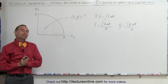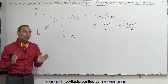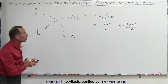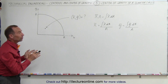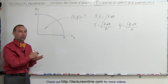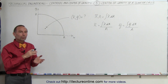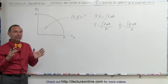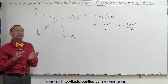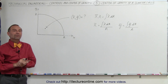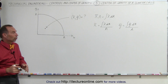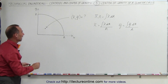Welcome to ElectronLine. Now let's put into practice what we've learned so far. What we're going to do here is take a whole bunch of different kinds of shapes and find the center of mass or center of gravity of each of those shapes. In this case, we're going to start with a quarter circle.